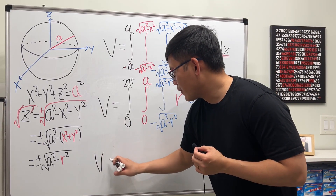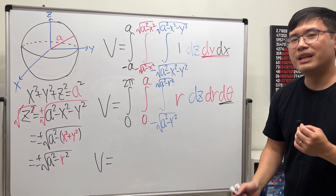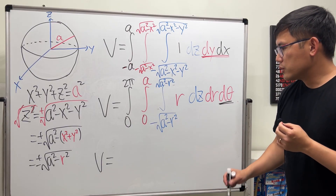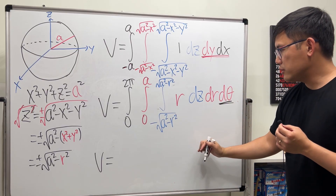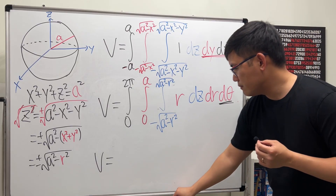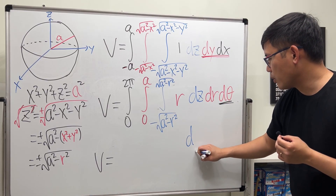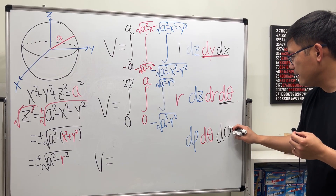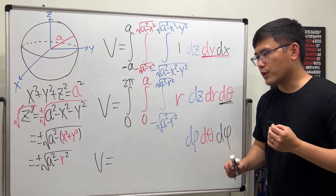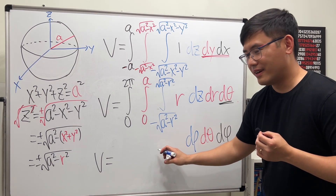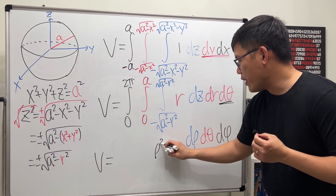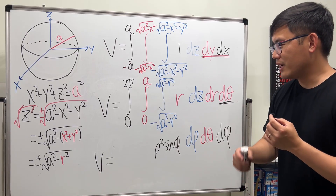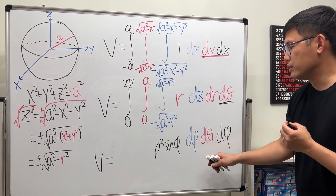Lastly, the best approach for a sphere is of course spherical coordinates. In this case, dx dy dz changes in the spherical system to dρ dθ dφ, but we need to make sure we include the extra factor ρ squared times sine φ. You can derive this by doing the Jacobian, or by looking at the geometry.